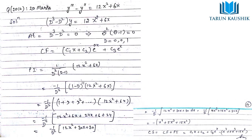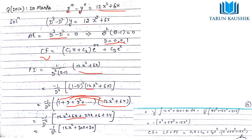For the 2012 20-mark question with triple and double derivatives equal to some expression: the auxiliary equation gives roots D = 0, 0, 0 and 1, giving the CF. For PI = 1/(D²(D−1))·(12x² + 6x), use (1−D)^(−1) expansion, multiply through, then perform double integration to get the answer.